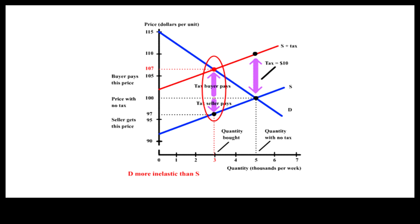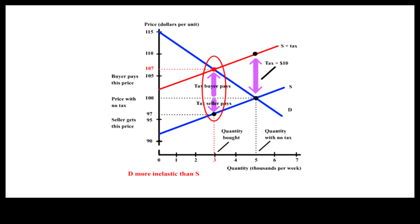Let us see a side-by-side comparison. On the left, demand and supply are equally inelastic — buyer and seller pay equal share of the sales tax. On the right, demand is more inelastic than supply, so buyers pay a larger share of the sales tax.